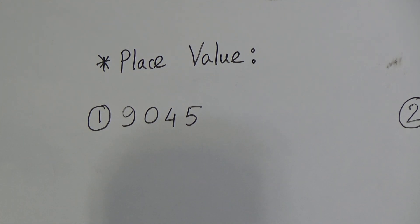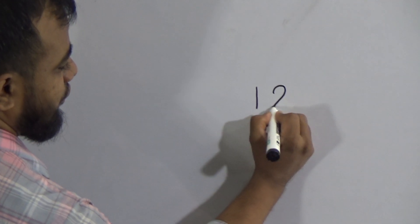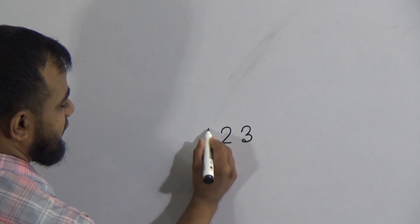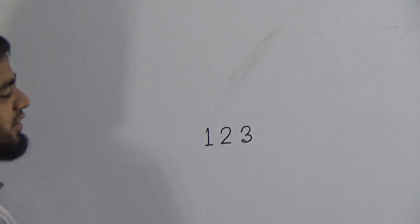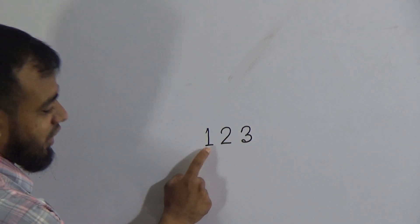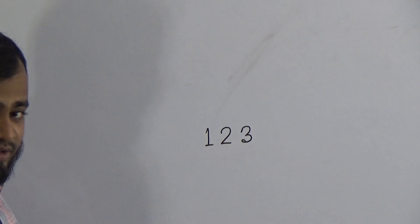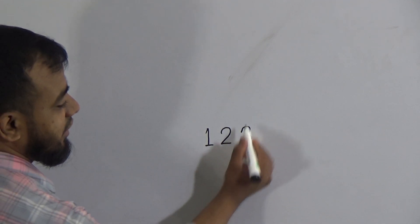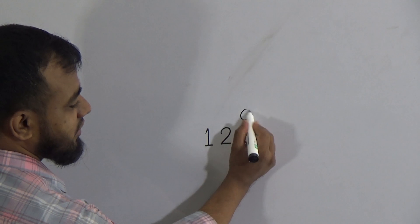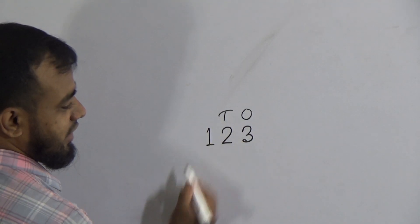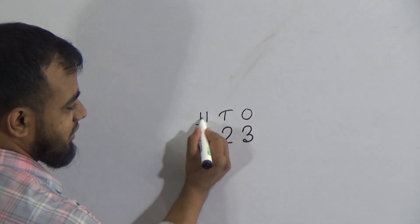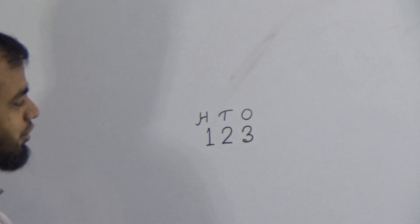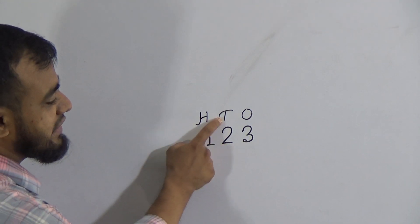Place value means the value of a digit's place in a number. For example, take the number 123. The digit 3 is in the ones place, 2 is in the tens place, and 1 is in the hundreds place. That is why we read this number as one hundred twenty-three.